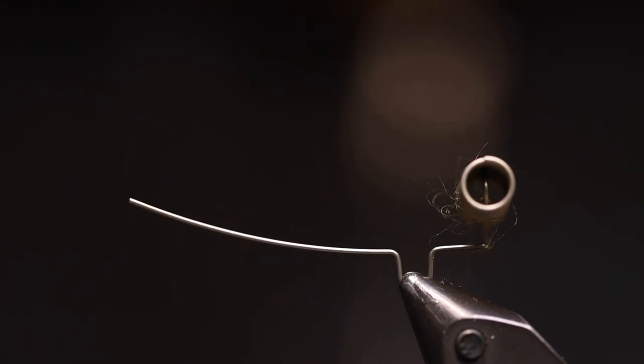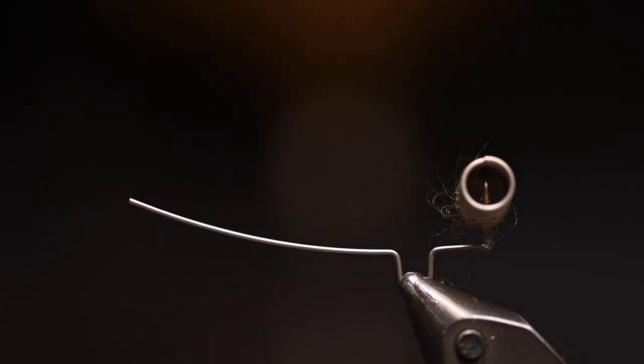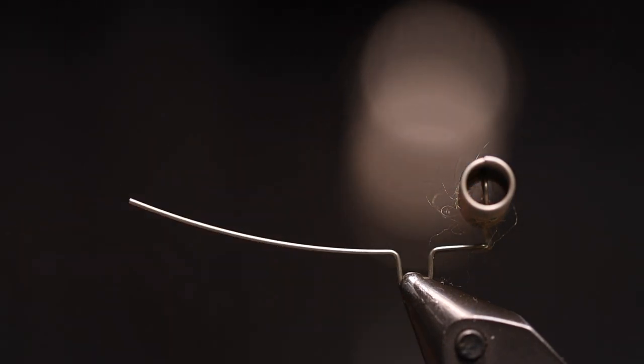And now we will start with the fly when we have done this. If you're in the mode to tie a lot of these, you should do all the bodies at first - tie up maybe 10 to 20 bodies. Then you'll have those ready so you can just focus on building those flies.